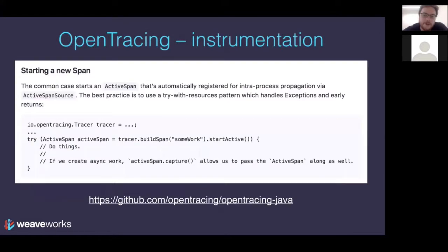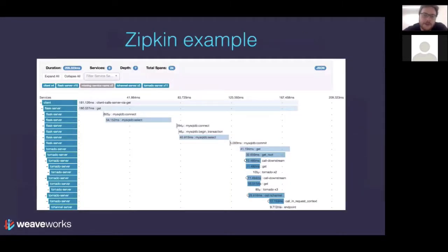Here's an example of how to start a span in Java. If you're starting a new span, you can create one by accessing an OpenTracing tracer, then saying active span equals: build a span with a name and start it. Everything you do within the try block will get annotated automatically with that span, and span IDs get propagated to any sub-requests created inside that span. That's just a taste of OpenTracing for Java — there's lots more at the GitHub URL shown.